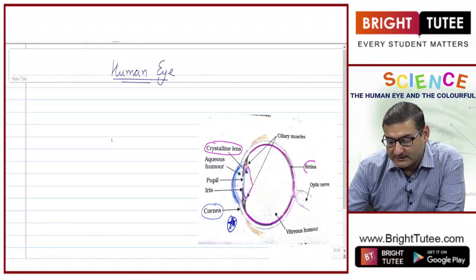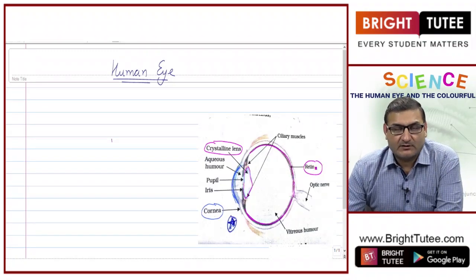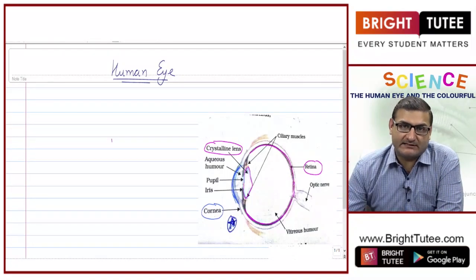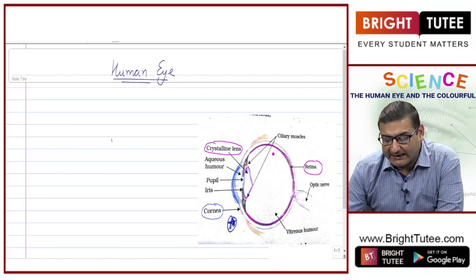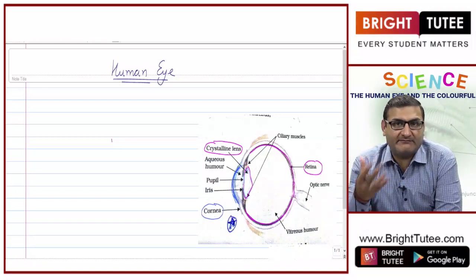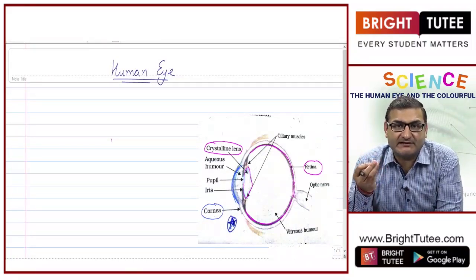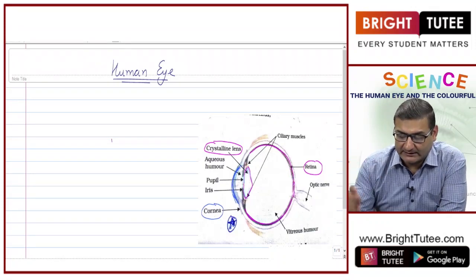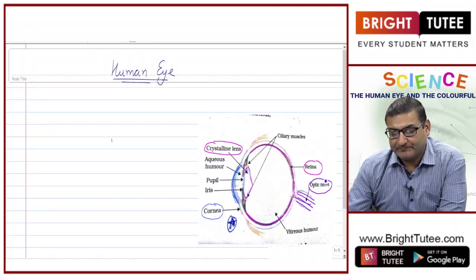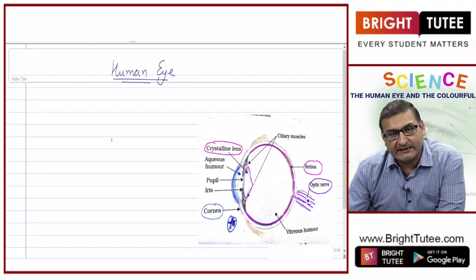That screen is known as the retina. The retina is basically a screen composed of numerous light-sensitive cells. When light falls on them, those light-sensitive cells get activated and generate electrical signals. Those electrical signals are carried by the optic nerves.